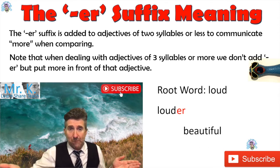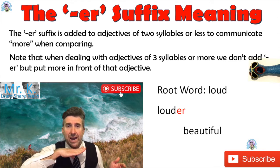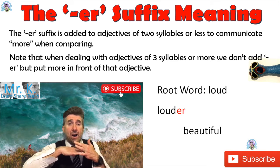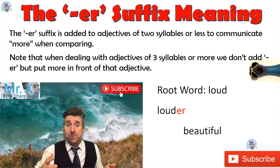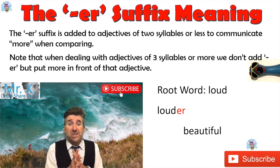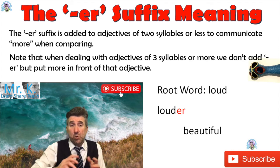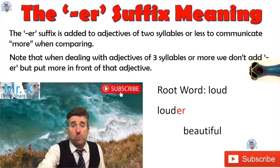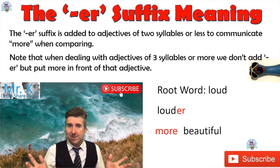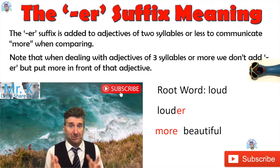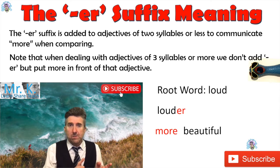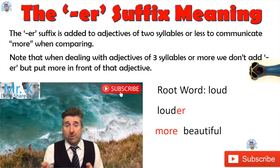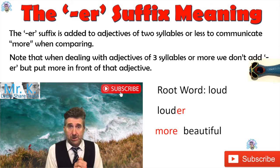For example: 'beautiful.' How many syllables does beautiful have? Let's do our syllable check by putting our hand under our chin — each time that we say a syllable, our chin should touch our hand. So let's say 'beautiful.' It's got three syllables in it. So because it's got three syllables, if we were to say more of this adjective, we wouldn't put ER on the end. We would put 'more' in front of it — 'more beautiful.' That sounds right. We don't say 'beautifuler' — that sounds horrible! But 'loud' has one syllable, so because it's less than three syllables, we add ER on the end to communicate more of that adjective.